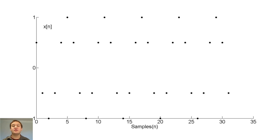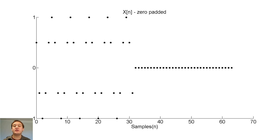What would happen if we reintroduced some of the zero samples from outside of our window? Let's investigate this question by re-adding 32 zero samples after our x of n.